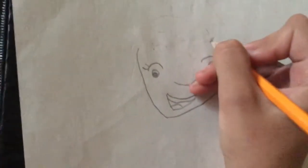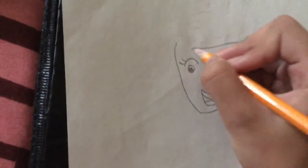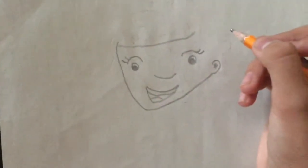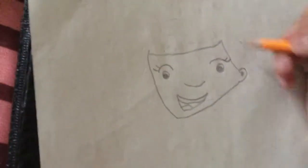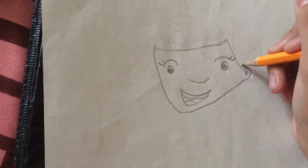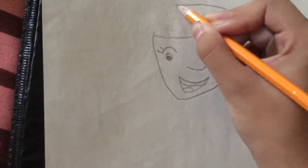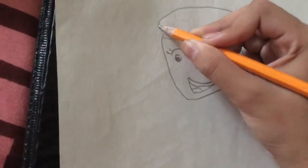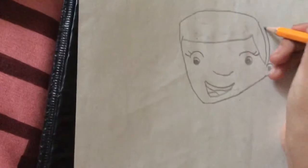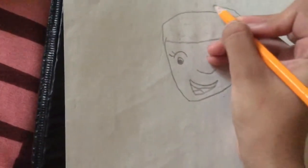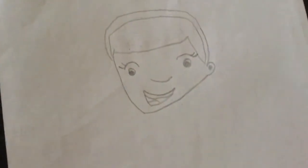Next for her hair, we come from this side and come right here. And then she has like a headband coming from this side and it stops right here. Then double the line so it actually looks like her headband.